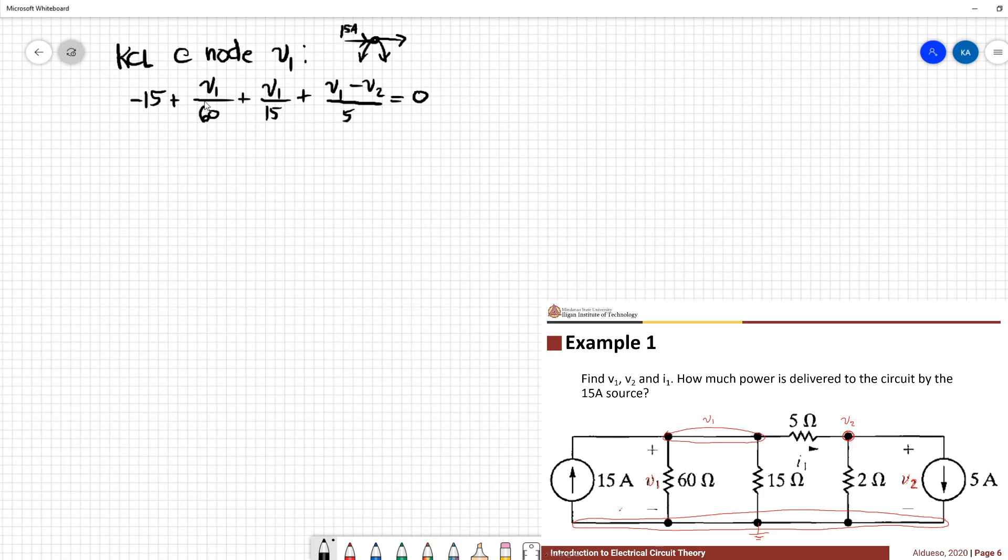So combining similar terms, we have 17 over 60 V1 minus V2 over 5 equal to 15. We have equation 1.